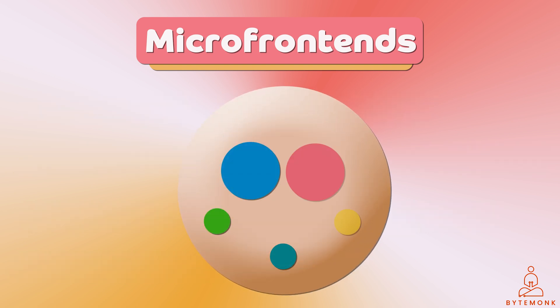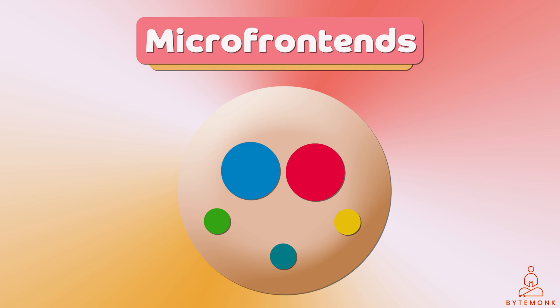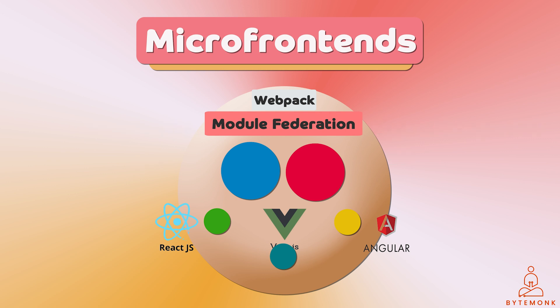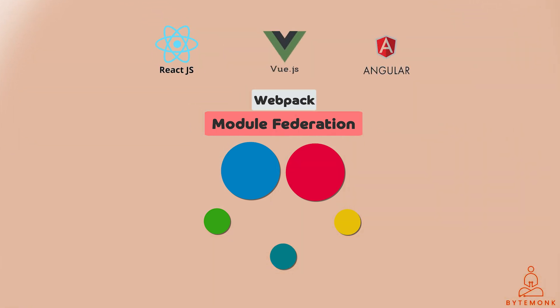If you are looking to build more complex microfrontend applications, you may want to read about SingleSPA where you can use multiple frameworks in one application. You can also look up BFF (Backend for Frontend) framework, Open Components, and Bit to compose components. Ultimately, the best way to decide which technologies you need to learn is to start building microfrontend applications.